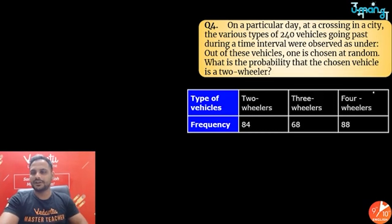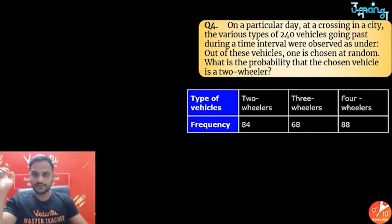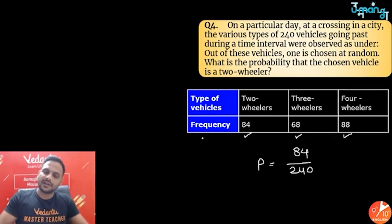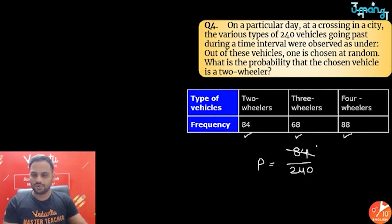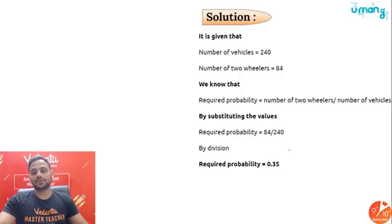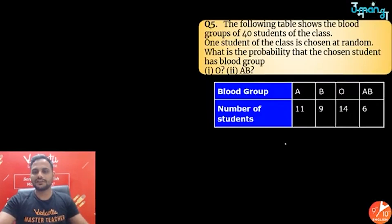Next question: at a crossing, 240 vehicles were observed — two-wheelers: 84, three-wheelers: 68, four-wheelers: 88. One vehicle is chosen at random. Probability that the chosen vehicle is a two-wheeler = 84/240. Dividing both by 4 gives 21/60, then dividing by 3 gives 7/20. So the probability of choosing a two-wheeler is 7/20.